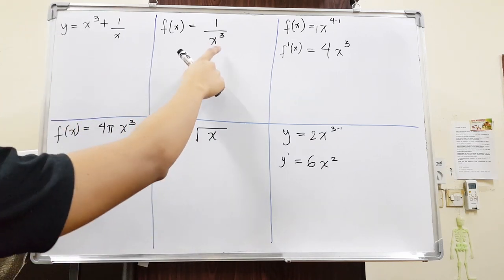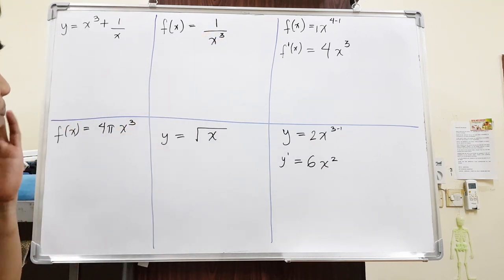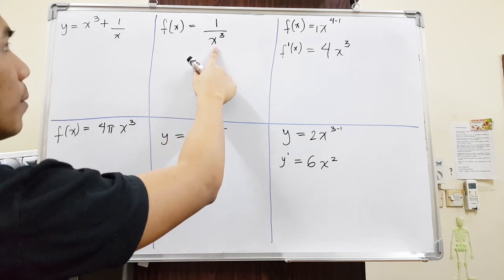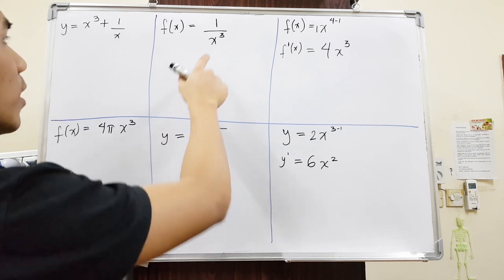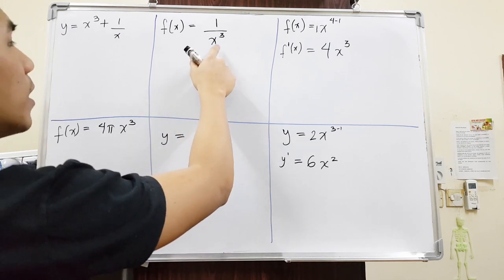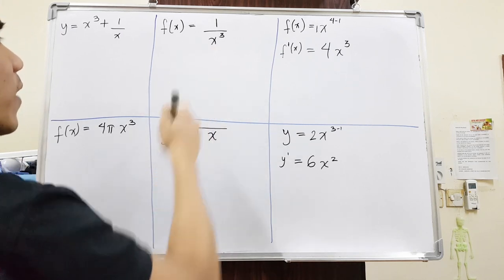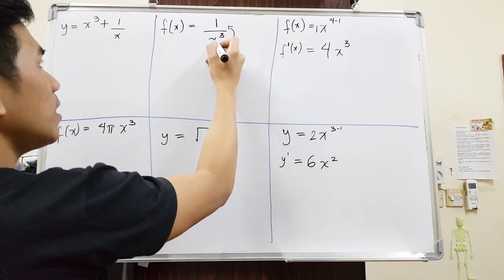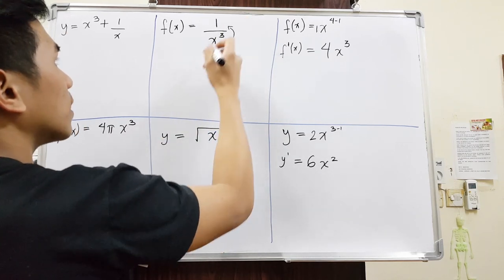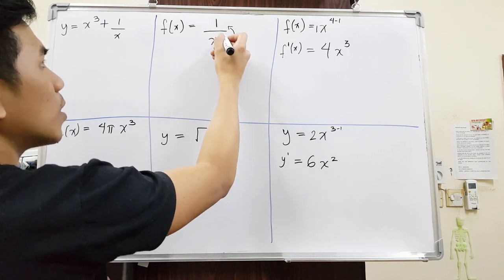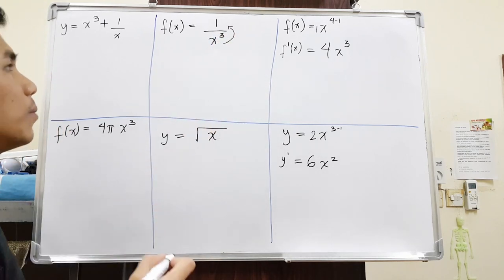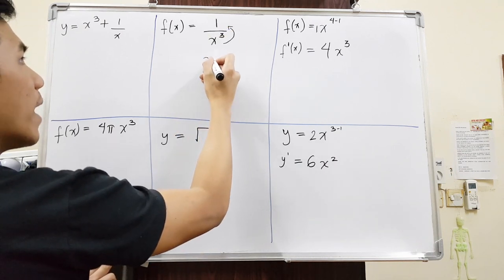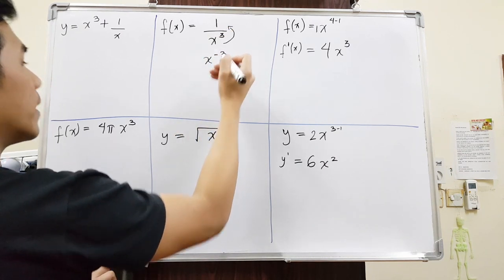For this one, it's pretty much the same thing, but as you can see, the variable is on the denominator. We are not going to differentiate it when the denominator contains a variable — we have to bring it on top. When you bring this power on top, it changes its sign from positive 3 to negative 3. This is a rule in exponents. So it will now be x to the power of negative 3.